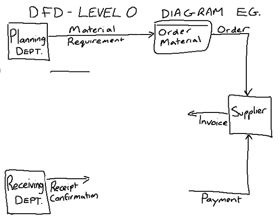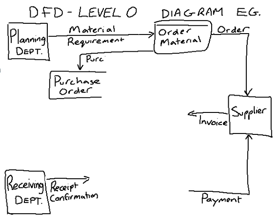One of the new features of a Level 0 diagram is having data stores. In this case we're going to make one called 'Purchase Order' — this is where our purchase orders will actually be filed for later use. So once we send our order to the supplier, we'll also be sending the purchase order to the file for later storage.